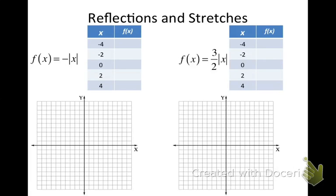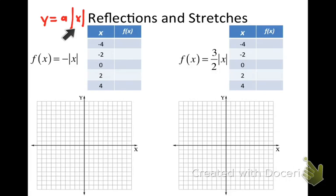In order to start understanding those more complicated absolute value equations, I want to break it down piece by piece. I want you to see what changing small things in that parent function y equals the absolute value of x does to the graph. I've rewritten it in the form y equals a times the absolute value of x, to show what effect multiplying by a constant has on the graph.